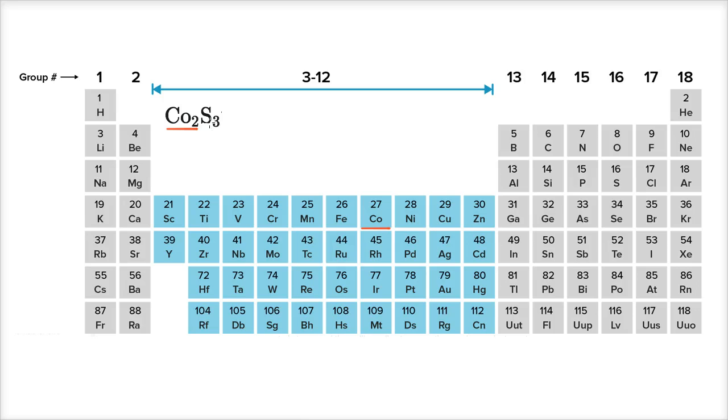So now let's look at the anion. Let's look at the sulfur, or as an anion, the sulfide. So let me underline that. And on the periodic table, we see sulfur is out here.